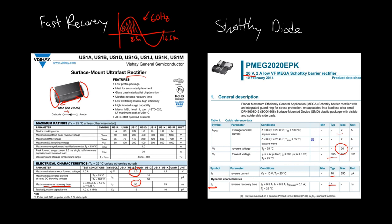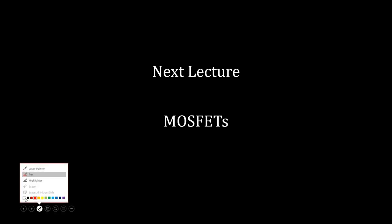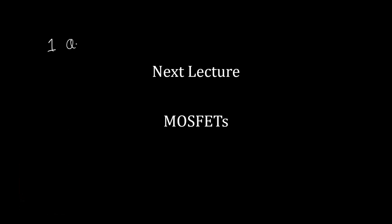So basically, we went over diodes being one-quadrant switches. We're interested in the forward voltage drop VF, the reverse recovery time TRR, the blocking voltage V_block, and the forward current the diode can conduct. Hopefully that was helpful. Next we're going to talk about MOSFETs. Thanks.